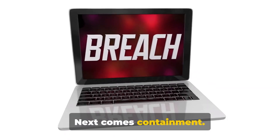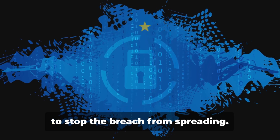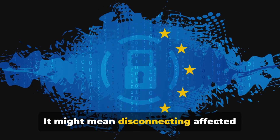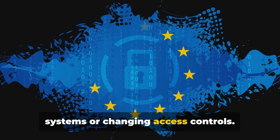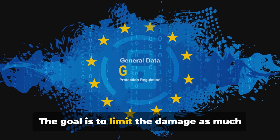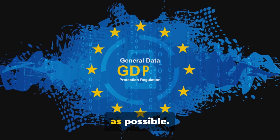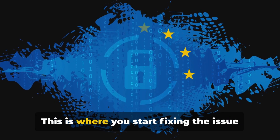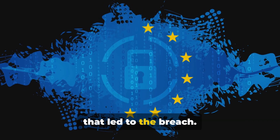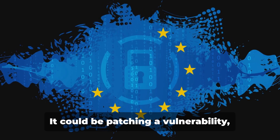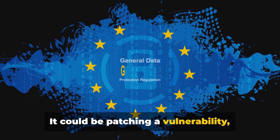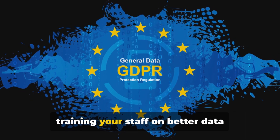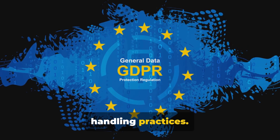Next comes containment — taking immediate measures to stop the breach from spreading. It might mean disconnecting affected systems or changing access controls. The goal is to limit the damage as much as possible. After containment, it's time for mitigation. This is where you start fixing the issue that led to the breach — it could be patching a vulnerability, improving your access controls, or training your staff on better data handling practices.